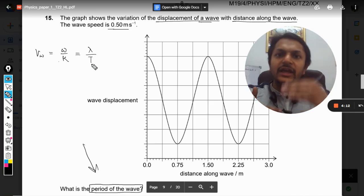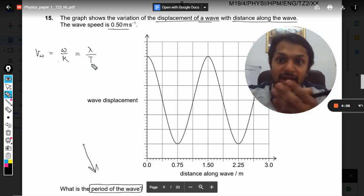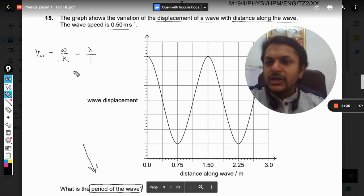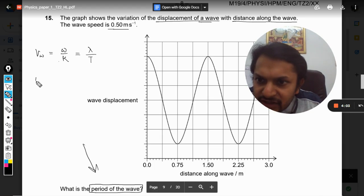So wavelength is the distance that the wave is going to travel in time period T, so lambda by T should be the velocity of wave. Velocity of wave is given as 0.5 meter per second.